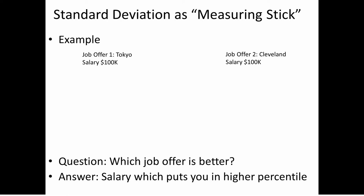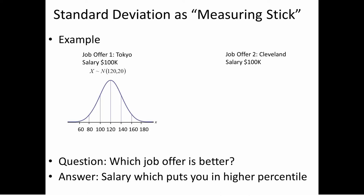Let's use the normal distribution to answer this question. Suppose you go online and find that salaries in Tokyo are normally distributed with a mean of 120 and a standard deviation of 20. The normal distribution for Tokyo incomes is centered at 120, stepping out in units of 20.